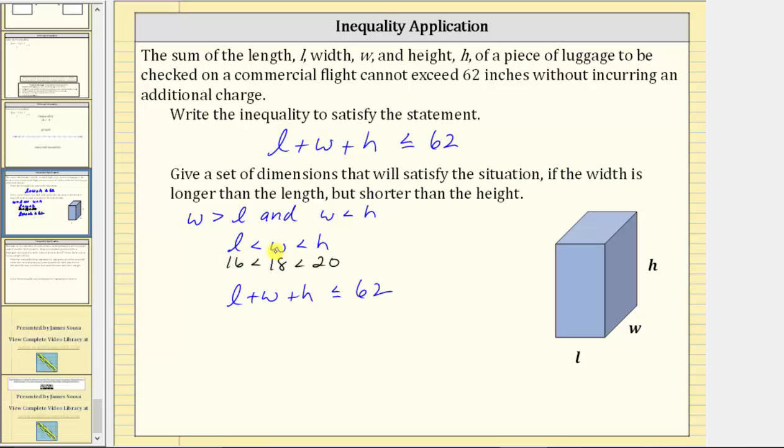As long as the sum of L, W, and H is less than or equal to 62, we just found one set of possible dimensions.